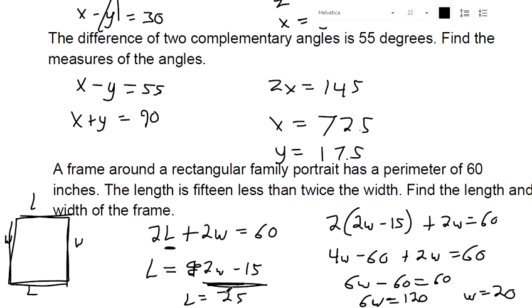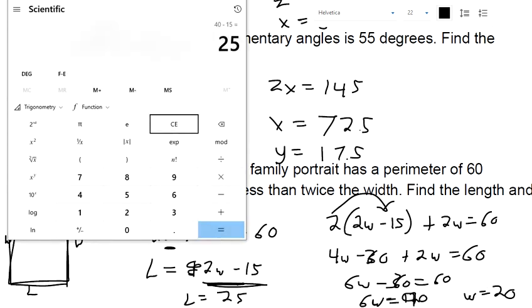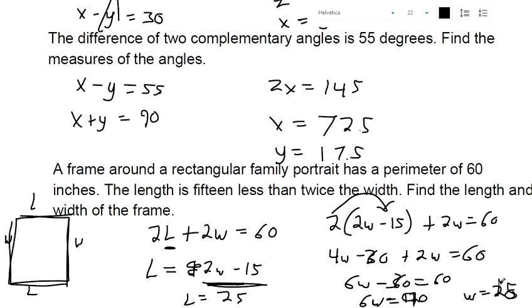Distribute the 2. Oh my gosh, 2 times 15 isn't 60. 2 times 15 is 30. So this would be 30. This would be 90. So the width is going to be 90 divided by 6. That should be 15. Good thing I thought about that before I finished the video. So plug 15 back in here. 15 times 2 makes 30, 30 minus 15 makes 15. Let's see, that does work because if you plug those in, that makes 60. Okay, so 15 and 15. I just missed something with the distributive property.